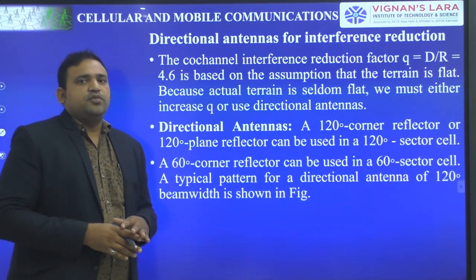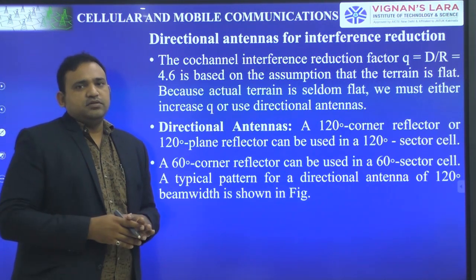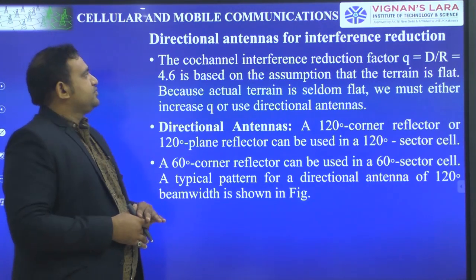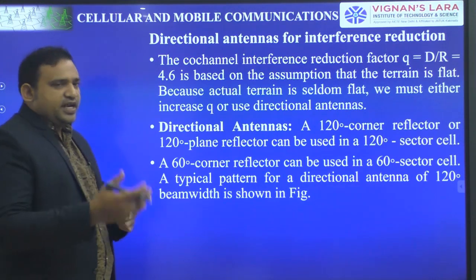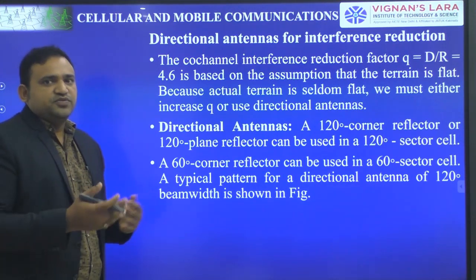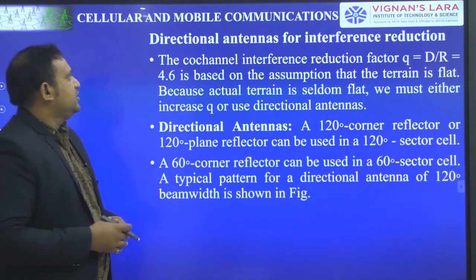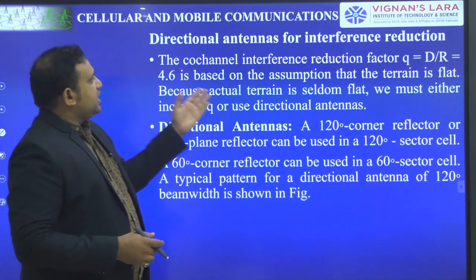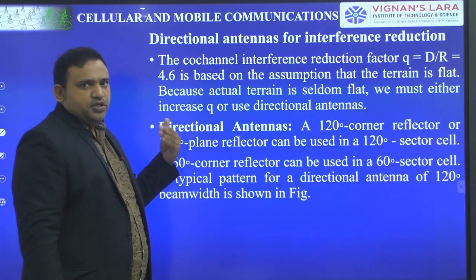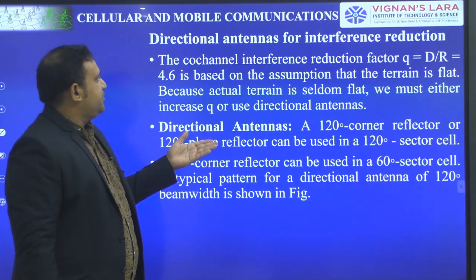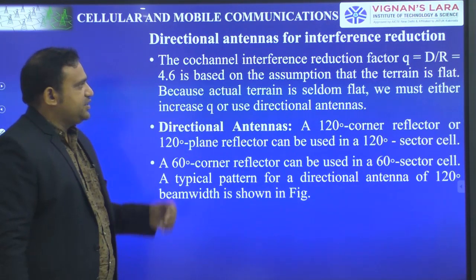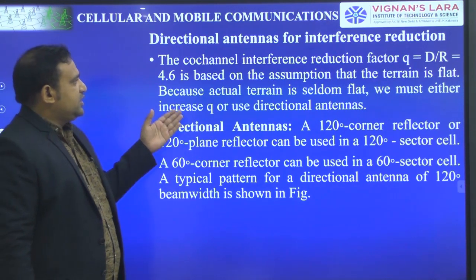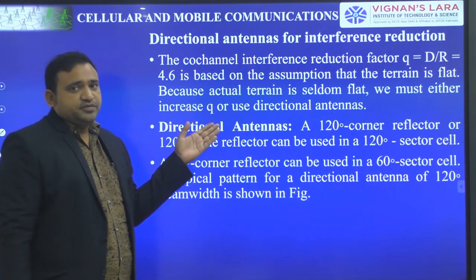Here we are discussing about the directional antenna pattern and how many transmitters and receivers we are using. The co-channel interference reduction factor Q is equal to D by R equal to 4.6. This is based on the assumption that the terrain is flat.